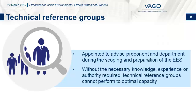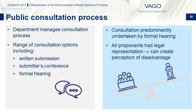A Technical Reference Group is appointed for each project subject to the EES process. The TRG provides advice to the proponent and the Department during the scoping and preparation of the EES. Proponent consultants we interviewed reported that when TRG members did not have the necessary knowledge, experience or authority, the TRG could not perform its role to its optimal capacity. During the EES process, the Department manages public consultation processes and advises the Minister. All projects we examined conducted the public review for an inquiry by formal hearing, and all proponents had legal representation. For those without legal representation, this can create a perception of disadvantage. The Department does not outline its reasoning for recommending inquiry by formal hearing over other inquiry options.